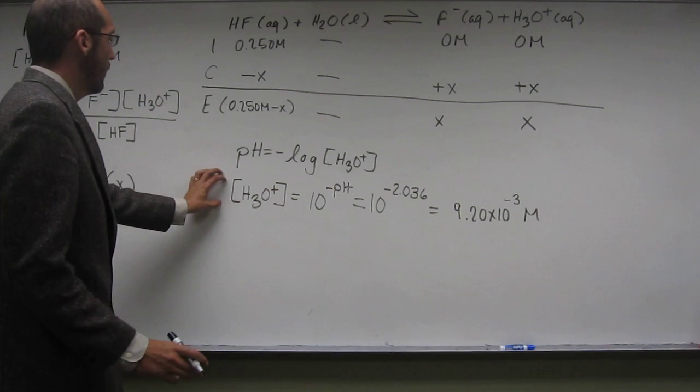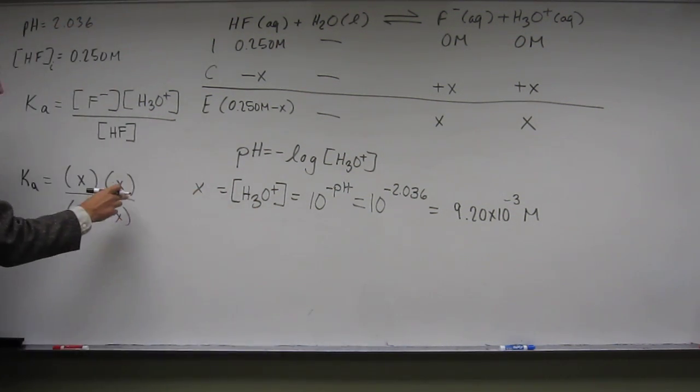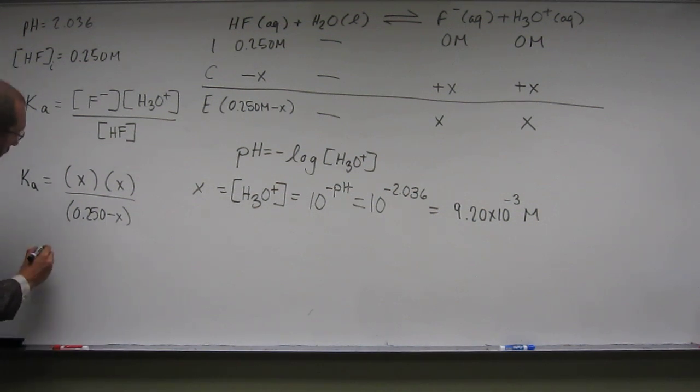And I get 9.20 times 10 to the negative 3 molar. So notice that equals H3O plus and H3O plus equals X. So we can plug that value in for all of those things.